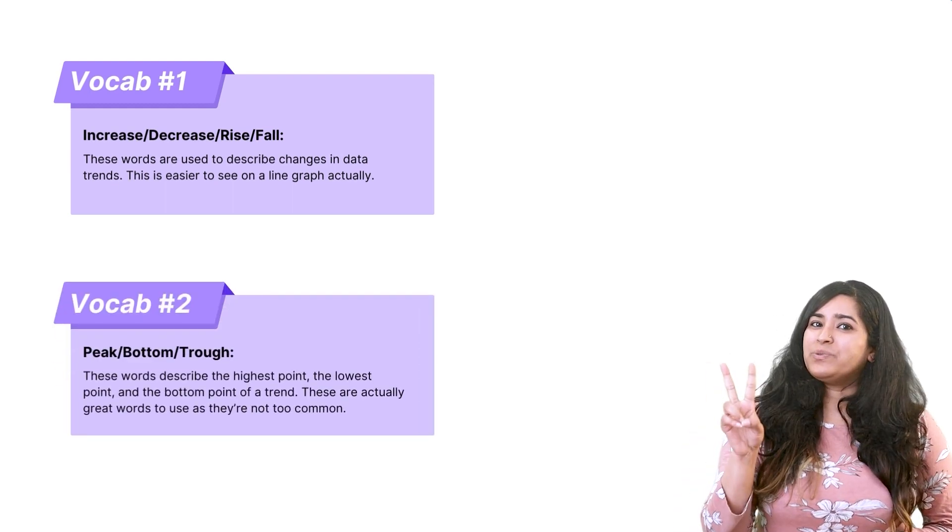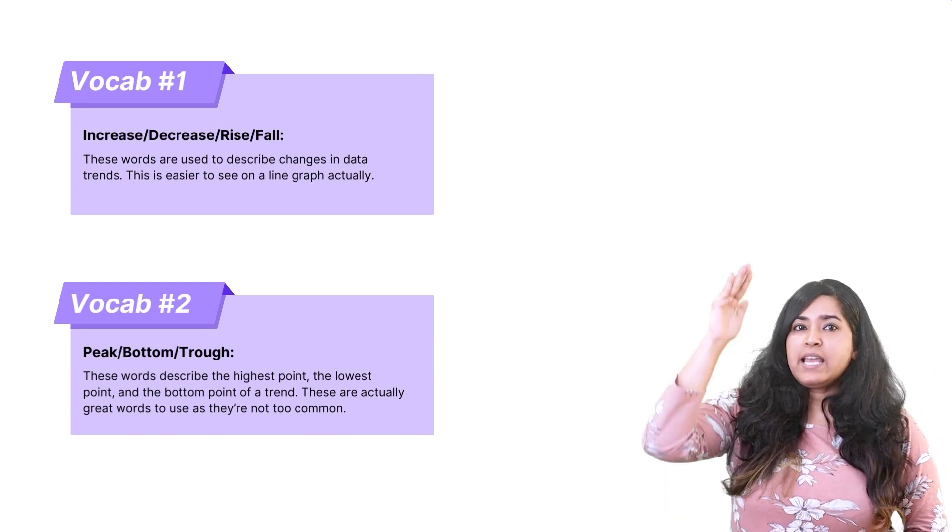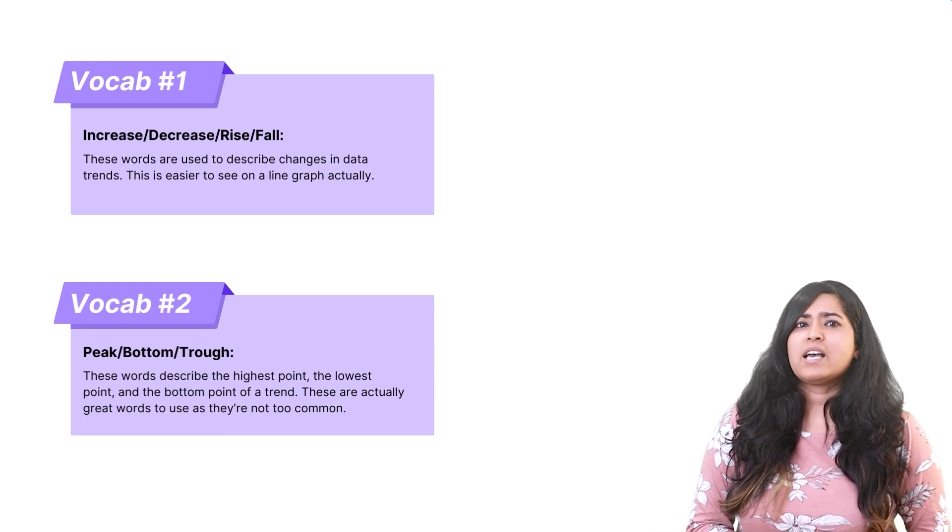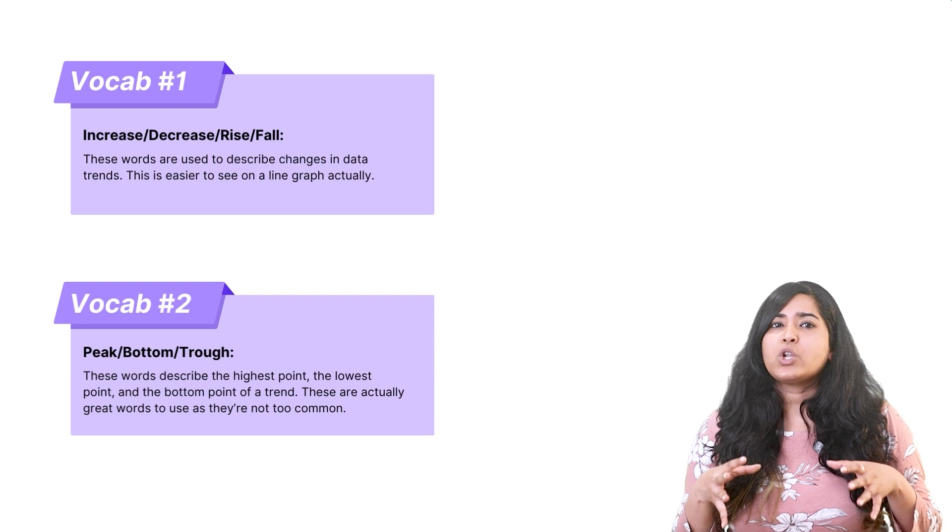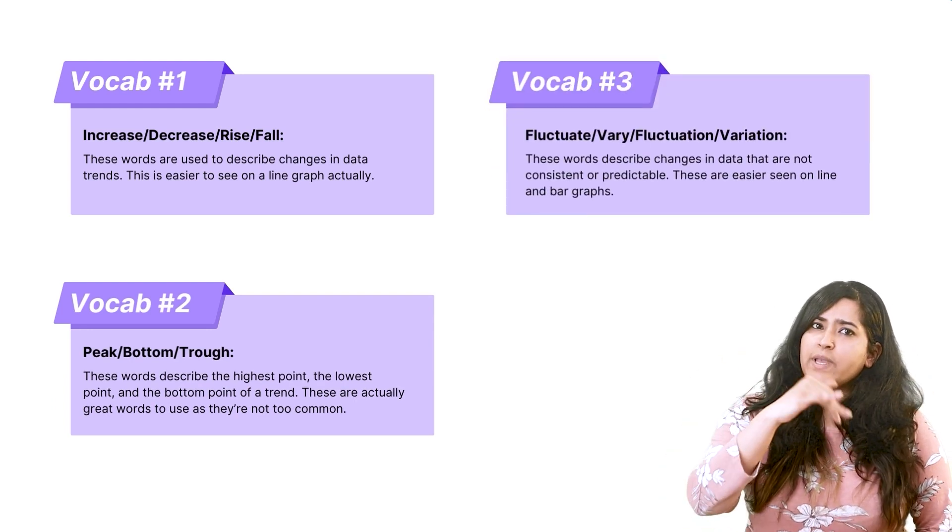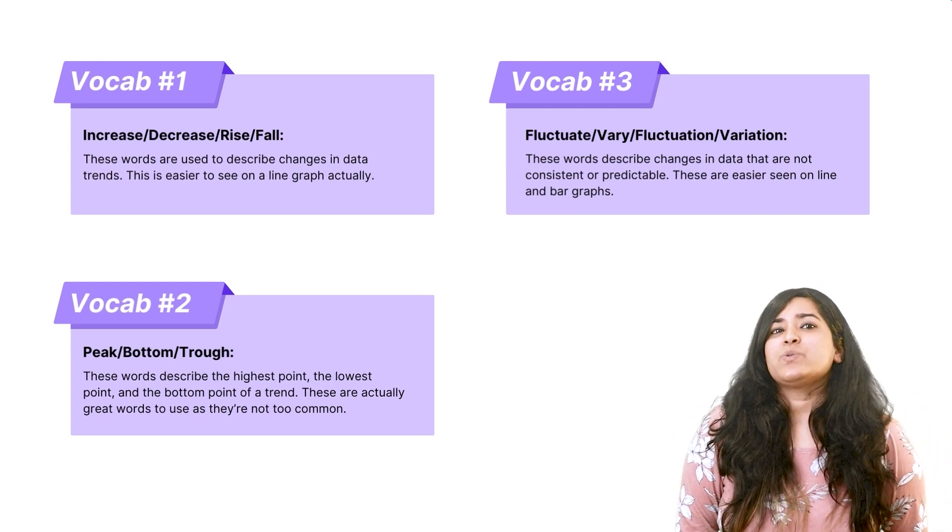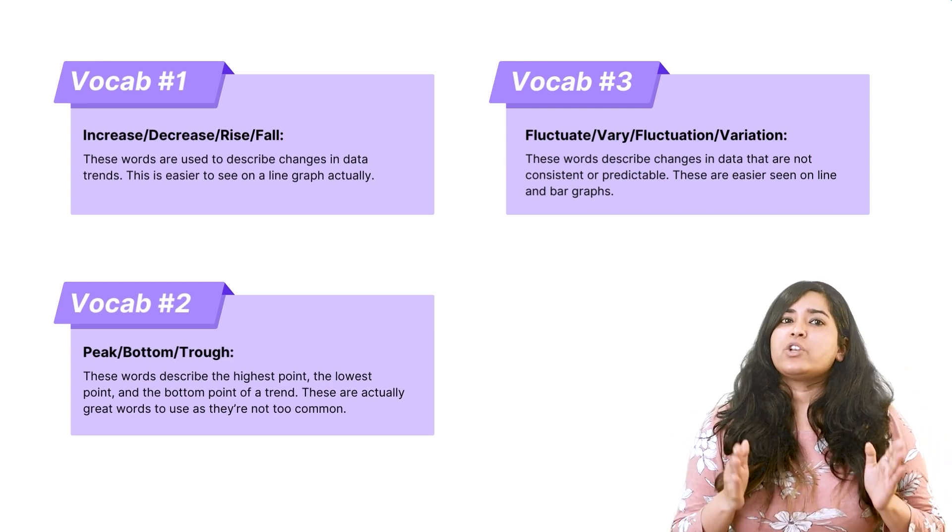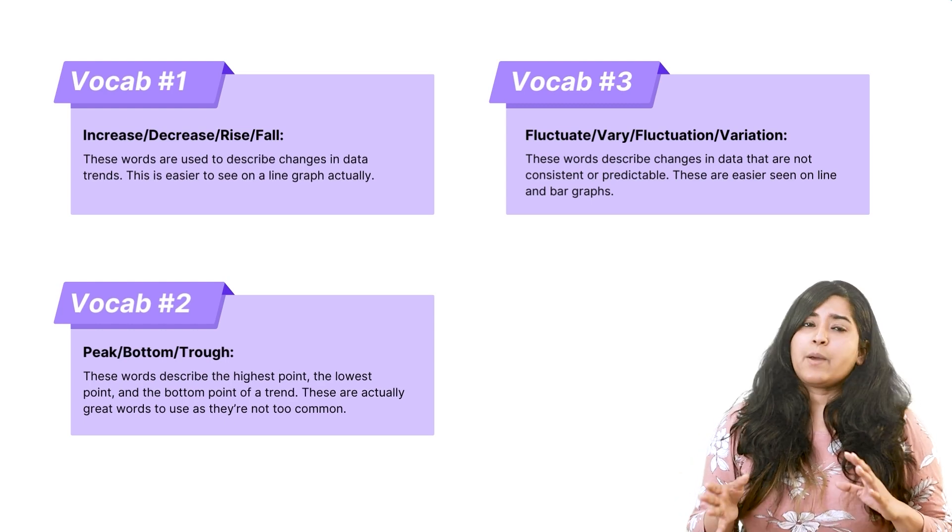Useful vocab number two: peak and bottom. These words describe the highest point and the lowest point and the bottom point of a trend. These are actually great words to use as they are not too common. Useful vocab number three: fluctuate, vary, fluctuation, and variation. These words describe changes in a graph that are not consistent or predictable. These are easier to see on line and bar graphs.